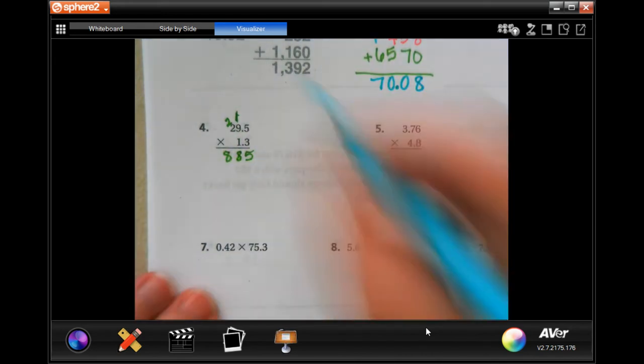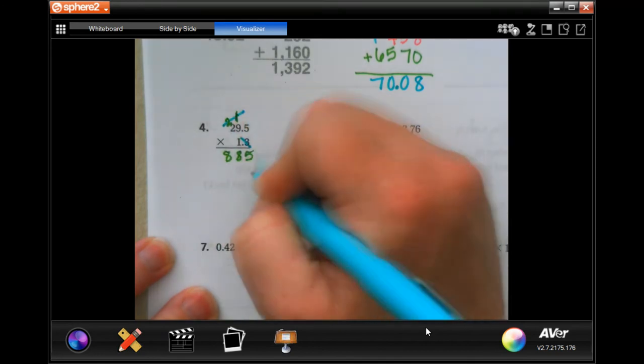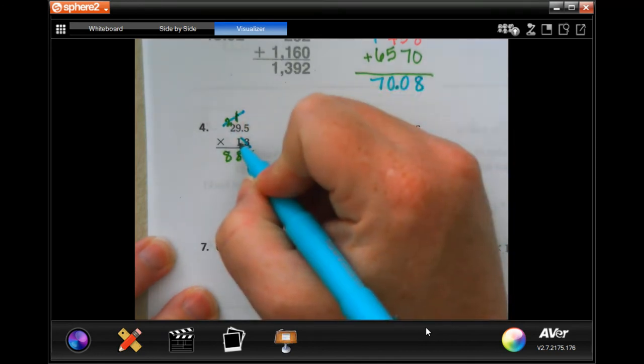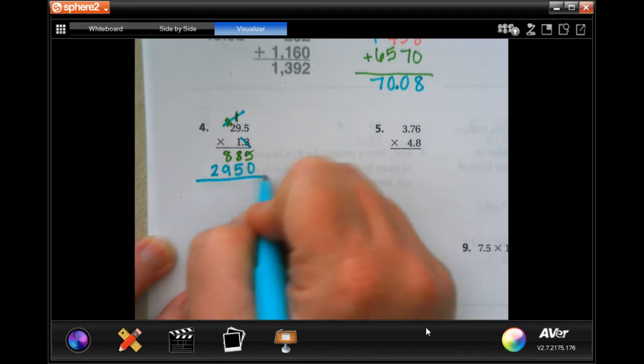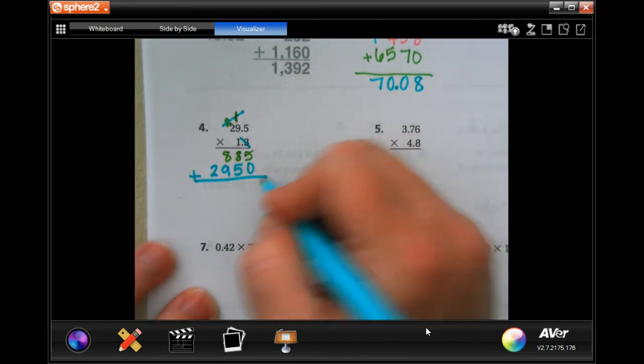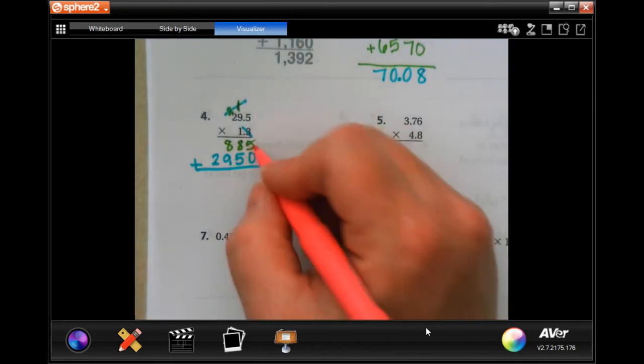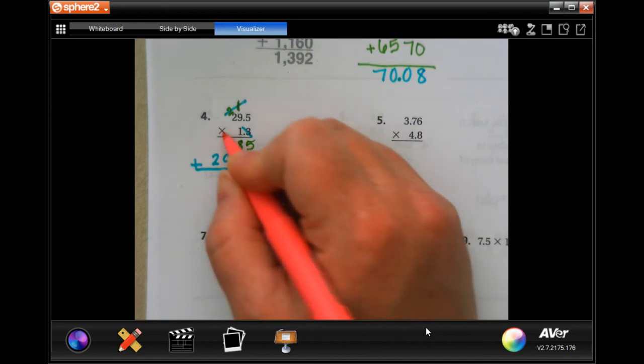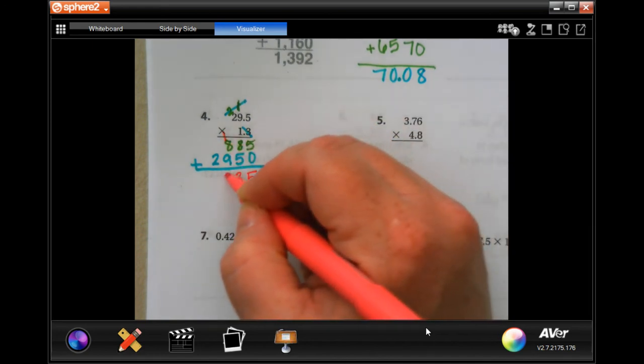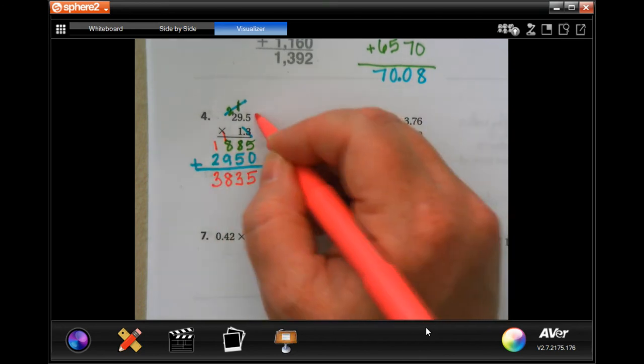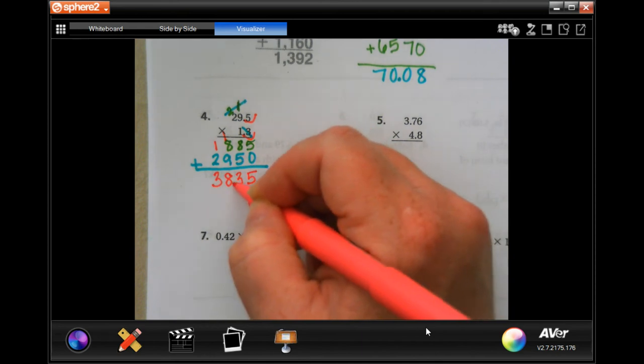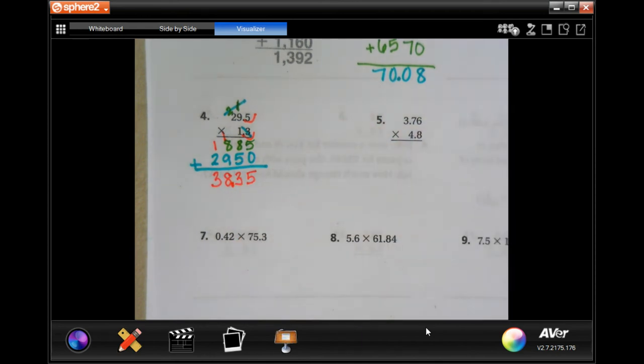Three times two is six, plus two more is eight. Now we're going to tick-tock, and then one times 29.5 is just 295. Add those up: five plus zero is five, eight plus five is thirteen, carry a one. One plus eight is nine, plus nine more is eighteen, carry a one. One plus two is three. Now one, two places, one, two places: thirty-eight point thirty-five.